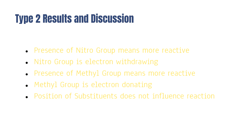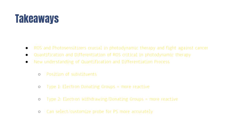The position of substituents did not influence the rate of reaction. Some key takeaways are that reactive oxygen species play an important part in photodynamic therapy and the fight against cancer, as well as in the actual generation of several diseases. Within this study, we found and gained a new understanding in the quantification and differentiation process. Specifically, we learned that the position of substituents has no influence on the reaction rate. For Type 1 reactions, electron donating groups made the compound more reactive. For Type 2, both electron withdrawing and electron donating groups could increase reactivity. Overall, we can now customize our probes to better fit any future application.